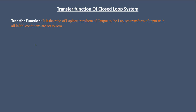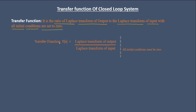Let us understand a simple definition of transfer function. Transfer function is the ratio of the Laplace transform of output to the Laplace transform of input, with the condition that all initial conditions are set to zero. We can write transfer function T as the ratio of Laplace transform of output to Laplace transform of input, with all initial conditions equal to zero.